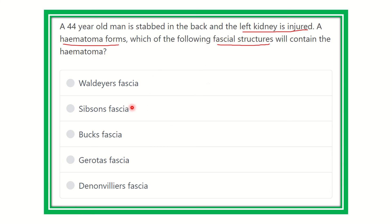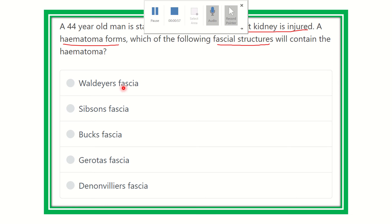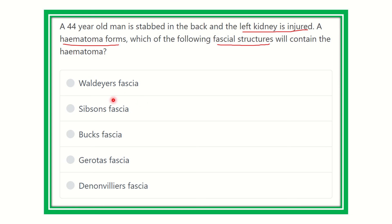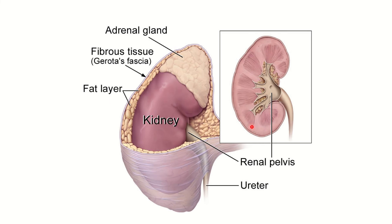We need to find out which fascia covers the kidney, because during injury to the kidney, the hematoma forms within that fascia. Here we can see the kidney with its cortex and medulla, and there is a fascia structure which covers the whole kidney. The hematoma would form in the space between this fascia and the kidney. The name of this fascia is Gerota's fascia.